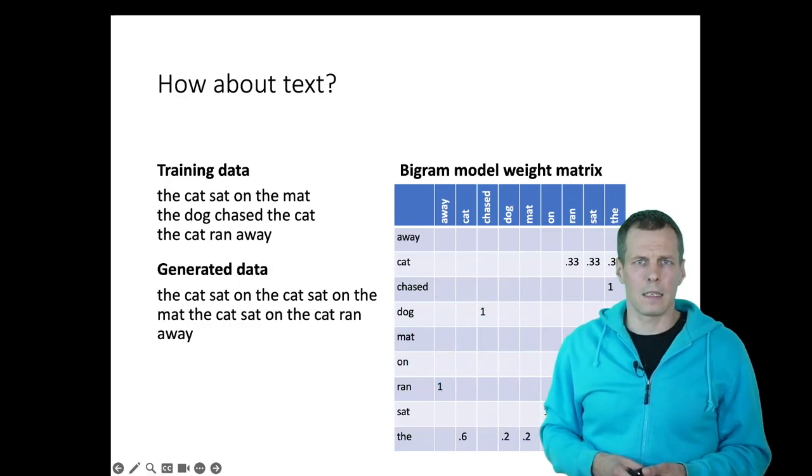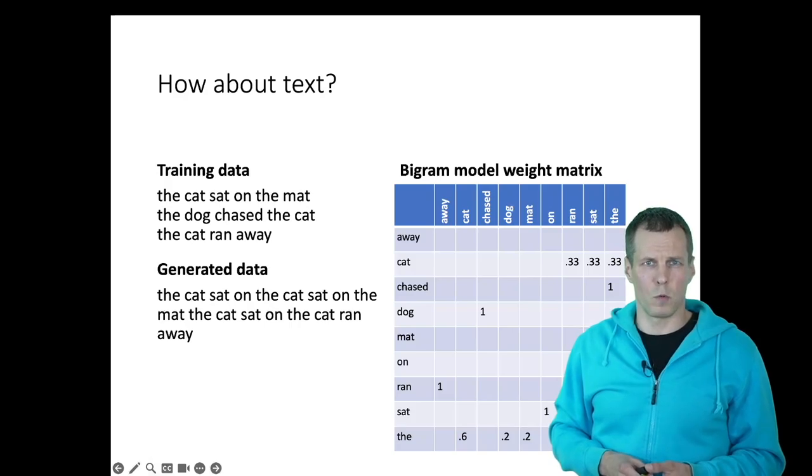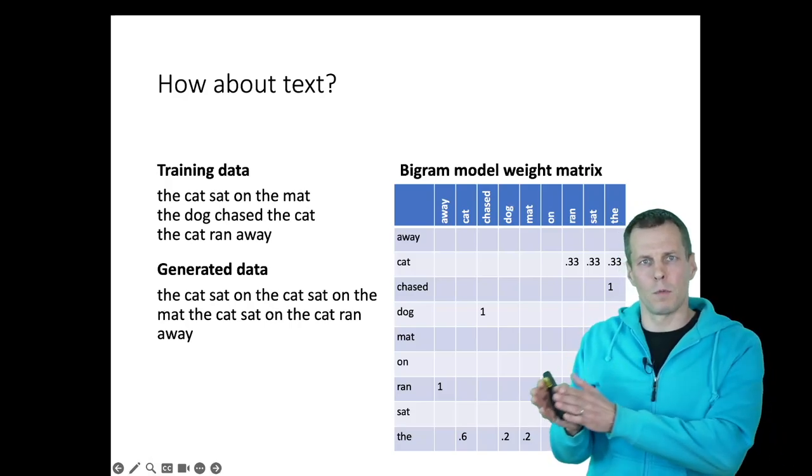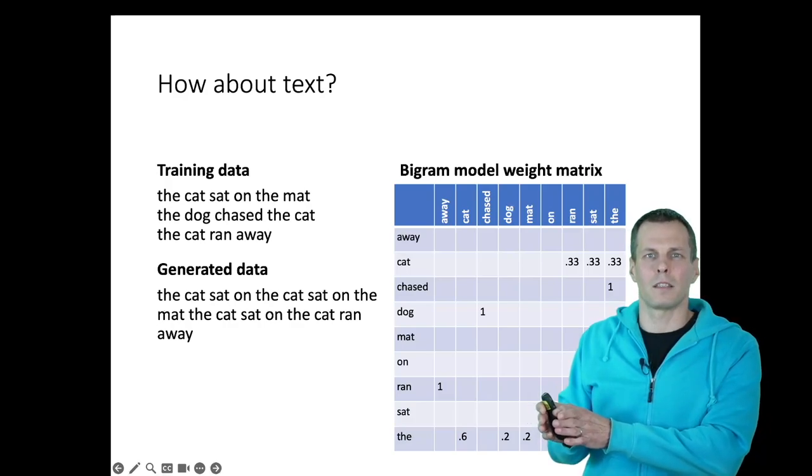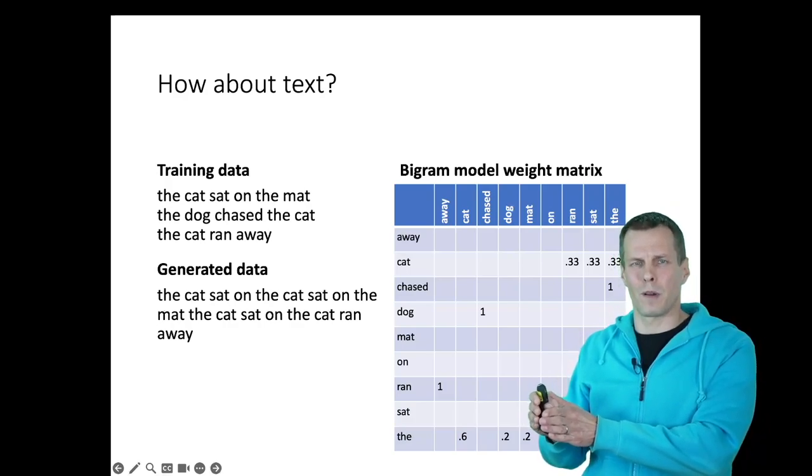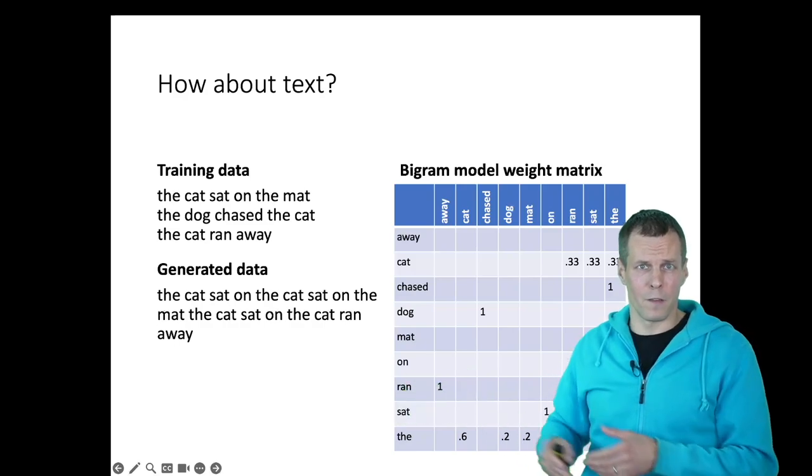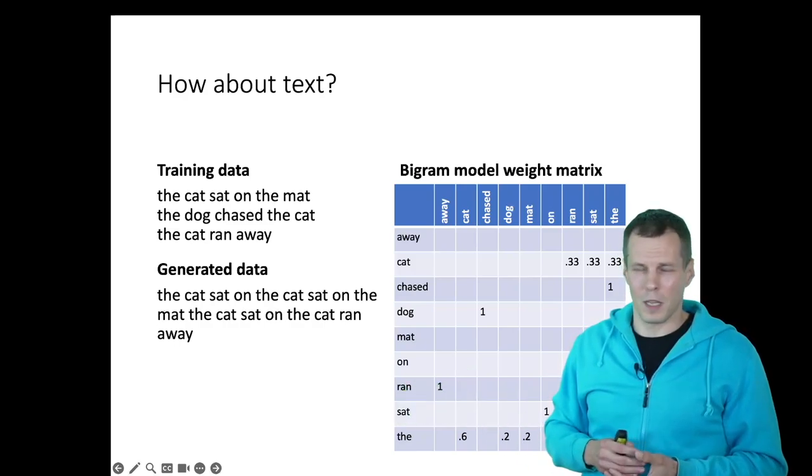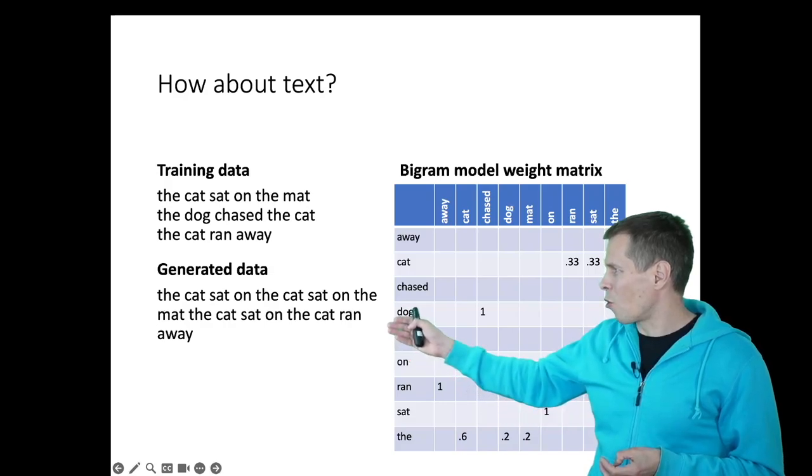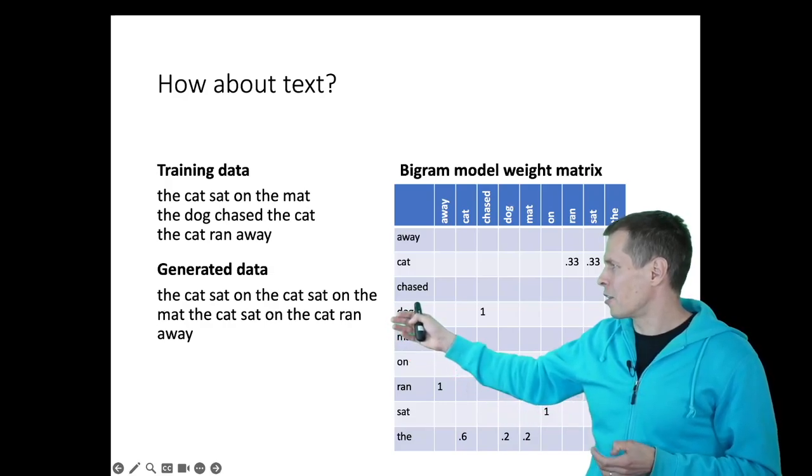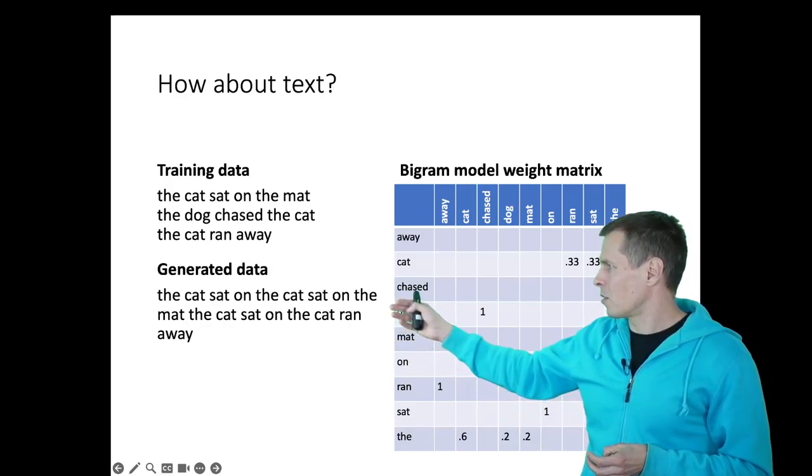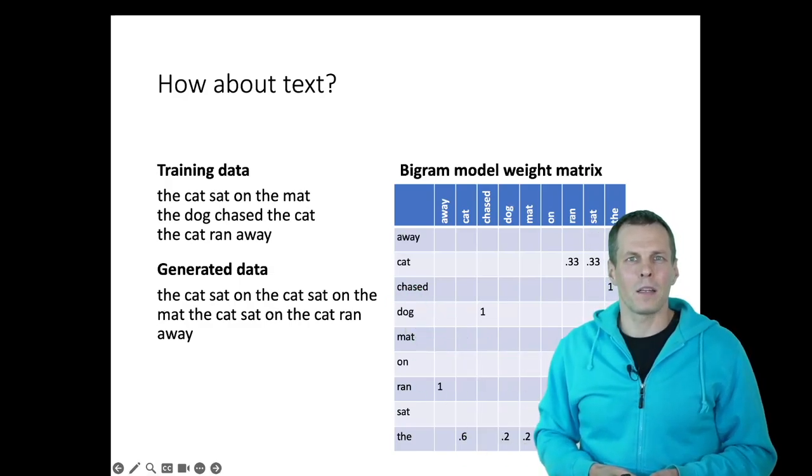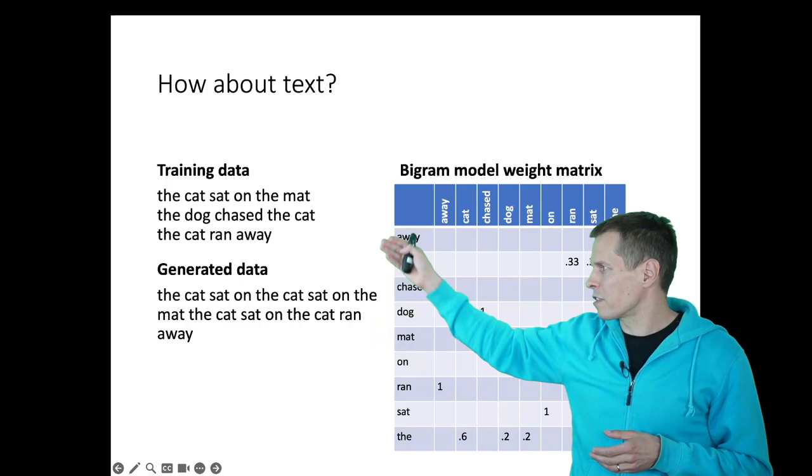This is how language models work. We have a word, and then we predict what is the next word. Then we take the predicted word, and we predict the following word. This is a pretty simple thing, and this story doesn't really make sense. 'The cat sat on the cat, sat on the mat, the cat sat on the cat, ran away.' But it looks somewhat similar to the original data.